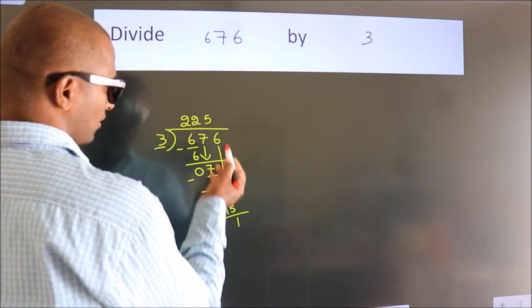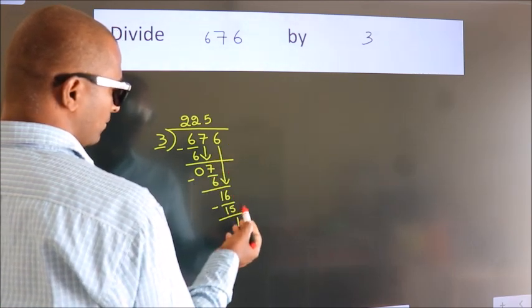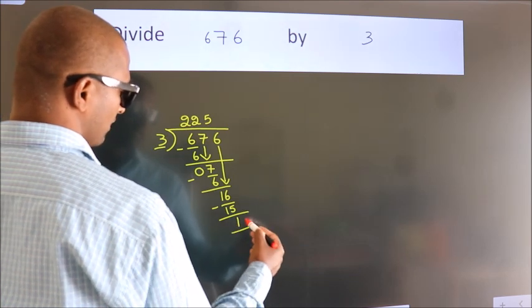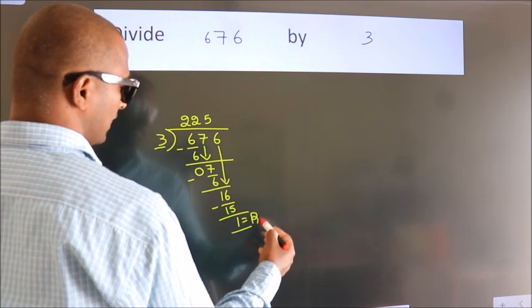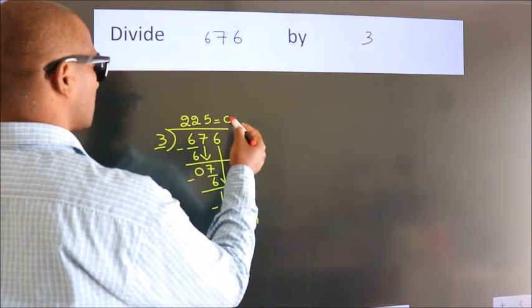After this, no more numbers to bring it down. So we stop here. This is our remainder. This is our quotient.